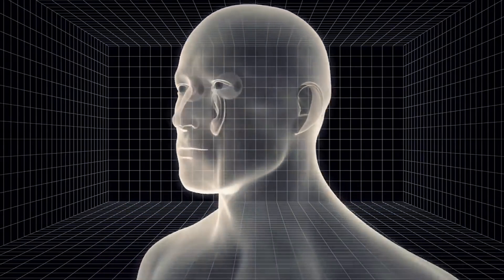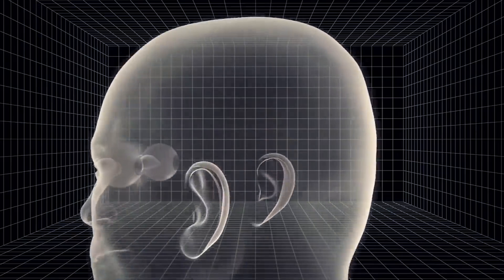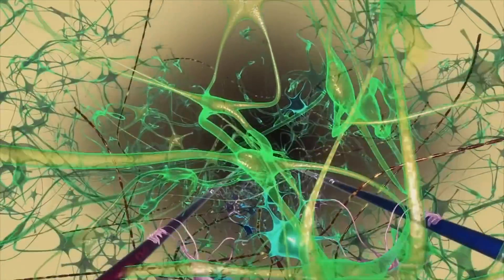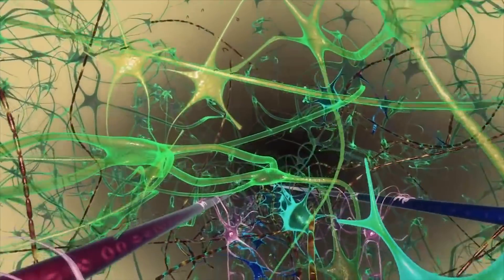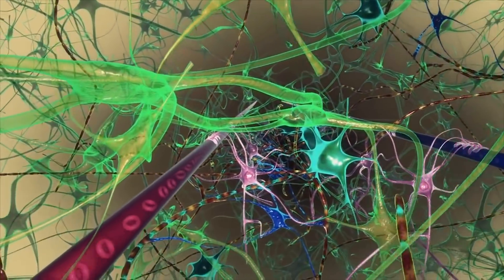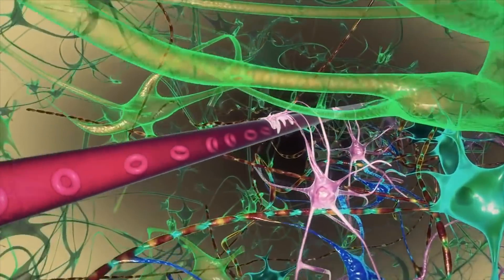Brain waste, including beta-amyloids and taus, generates an interstitial fluid during daily cogitation. While some of the waste dissolves in interstitial fluid, the majority must be transported out via cerebral spinal fluid.